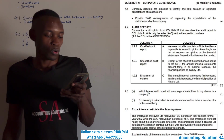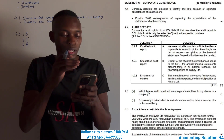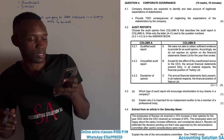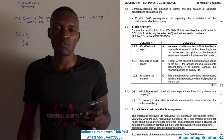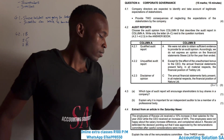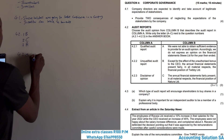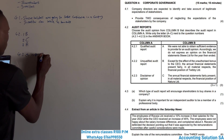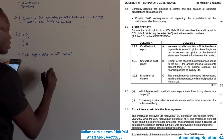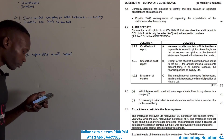Question 4.3: which type of audit report will encourage shareholders to buy shares? Obviously it's the unqualified audit report, because everything is correct and fair. This is the only one where everyone can choose to invest in the company.